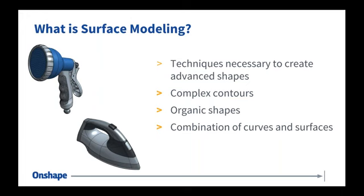Surface modeling is created using a combination of curves and surfaces. A lot of the focus is going to be not just surfaces, but also the curves that we need to make those surfaces. You would go to surface modeling in areas where the solid modeling equivalent just isn't as easy to create. A lot of what surface modeling is, is thinking about your model in terms of faces and not necessarily as enclosed volumes. In solid modeling, everything is an enclosed volume — extrude, revolve, sweep, loft all create solid parts by default.